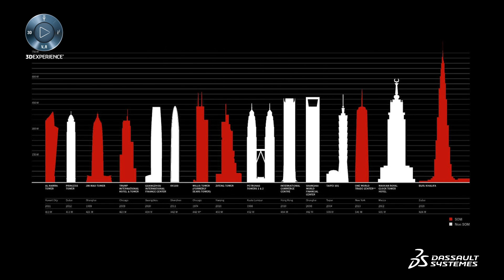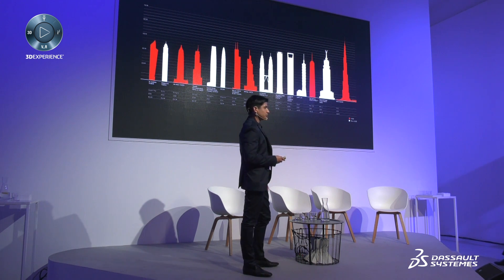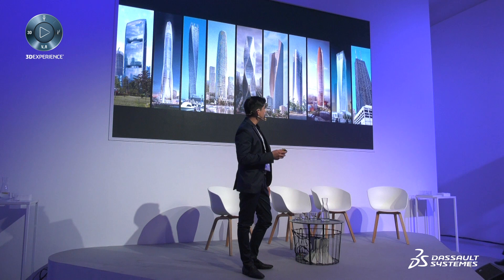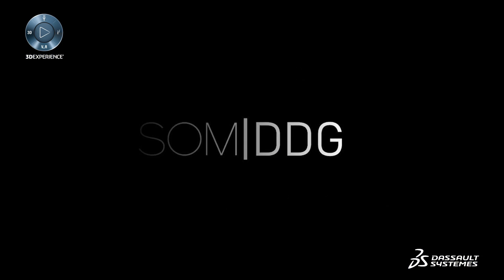Out of the 15 tallest structures in the world, SOM has completed seven, with Burj Khalifa being the tallest. Many of the tall structures we design come with very complex articulations, but the complexity is not haphazard — there's a lot of intentionality behind each building, coming from performance, culture, sustainability, and structural engineering. Our firm is not just an architectural firm but also an engineering practice. We're one of the few true A&E firms in the world.